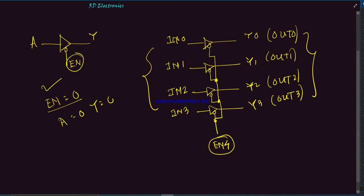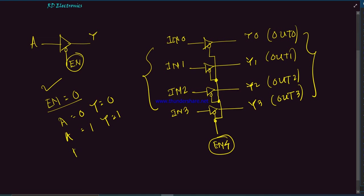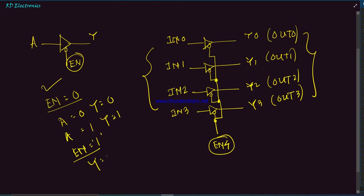When enable equals 0 and A equals 0 then Y equals 0; if A equals 1 then Y equals 1. But if enable equals 1, the output goes to high impedance state. This same logic applies to the four-input tri-state buffer.